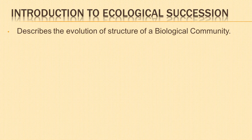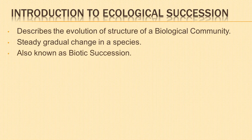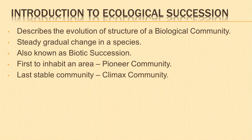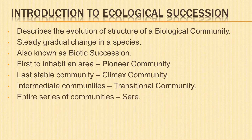Ecological succession is the process that describes how the structure of a biological community evolves over time. It is the steady and gradual change in species of a given area with respect to the changing environment. It is also known as biotic succession. The first community to inhabit an area is called the pioneer community. The last stable community is known as the climax community. The transitional communities are the intermediate communities between the pioneer and the climax community. The entire series of communities is called a sere.